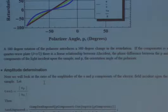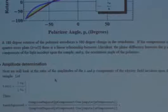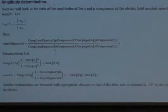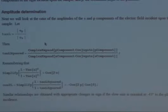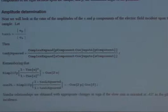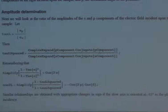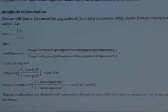For the amplitude determination of the S and P components, the tangent of L equals |E_p| over |E_s|. Then tangent squared of L is obtained by multiplying the P component by its complex conjugate and similarly for S. From that we can calculate tangent L squared.